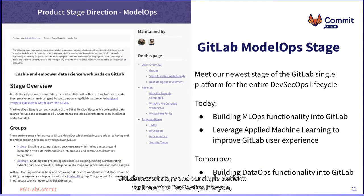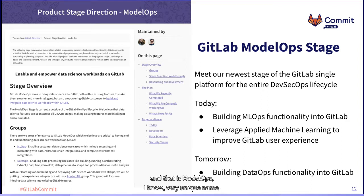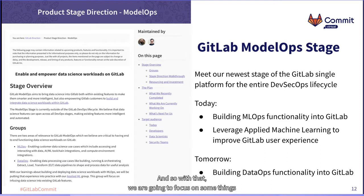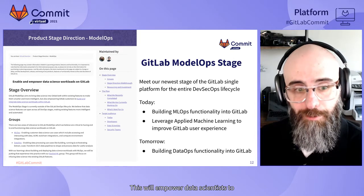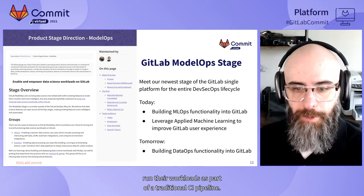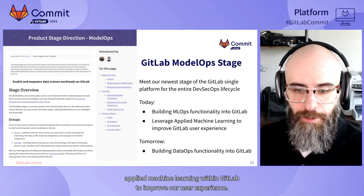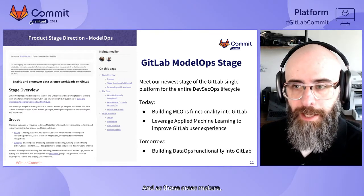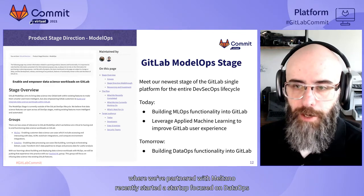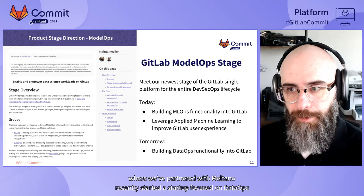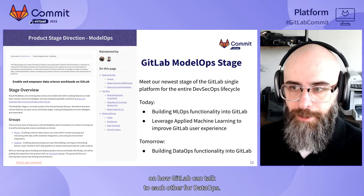Today we want to talk about GitLab's newest stage in our single platform for the entire DevSecOps lifecycle: ModelOps. In the near term, we're looking at building MLOps functionality into the GitLab platform to empower data scientists to run their workloads as part of a traditional CI pipeline. We're also beginning to leverage applied machine learning within GitLab to improve user experience, and in the short term we've partnered with Meltano, a startup focused on DataOps, on how GitLab and Meltano can work together.